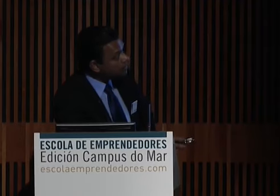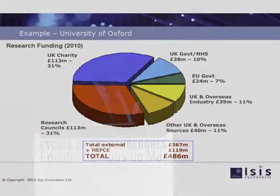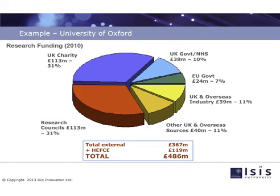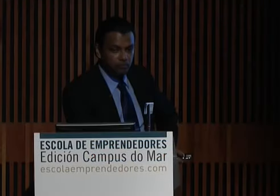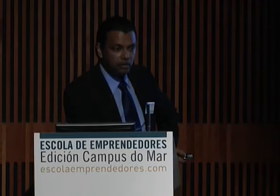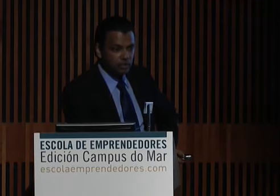As you can see, a lot came from UK charities, research councils, UK government and the National Health Service, the EU government, UK and overseas industry, and other sources. The total external funding came up to $367 million — that's just in one year, 2010. And then the Higher Education Funding Council for England provided $119 million to Oxford. So the total research spend in one year was $486 million. And how much did ISIS bring in terms of technology commercialization back in 2010? About $7 million.